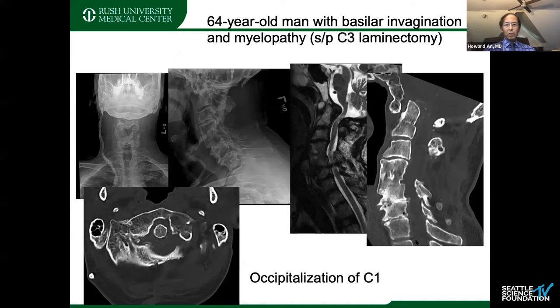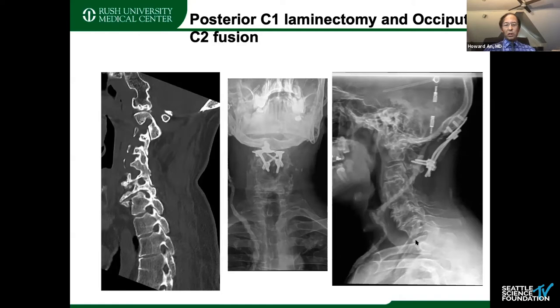This is a more recent case of previous laminectomy fusion, but this patient came in with a really profound myelopathy with basilar invagination. Revision posterior surgery with the previous laminectomy — you've got to do it very carefully. I had to do a C1 occiput laminectomy decompression with stabilization, as you can see there.